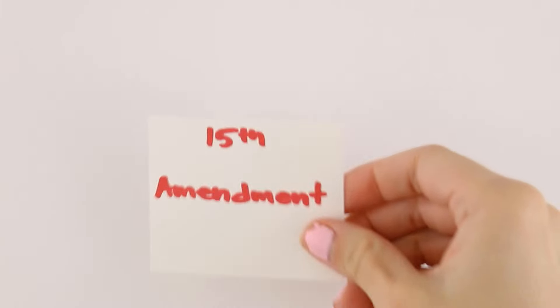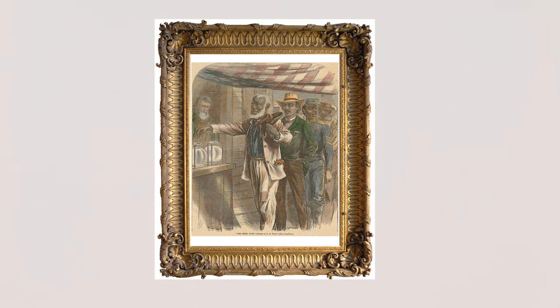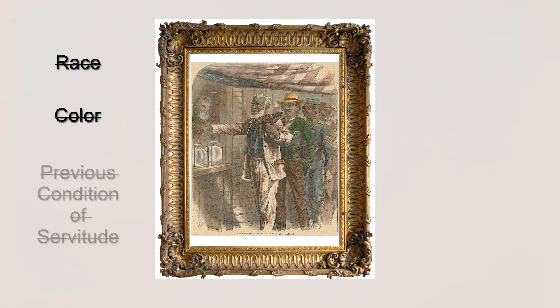The 15th Amendment established voting rights for former slaves. It states that no state can deny a person the right to vote based on race, color, or previous condition of servitude.